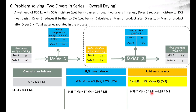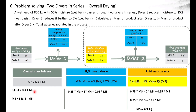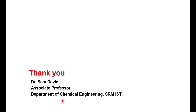In the solid balance equation, M4 becomes 0, leaving M3 and M5. Replacing M3 with 533.3 kg, we solve for M5, which comes to be 421 kg. Using the overall mass balance equation, M4 equals M3 minus M5, which is 533.3 minus 421, giving M4 equals 112.3 kg. M4 and M5 values for Dryer 2 have now been calculated.